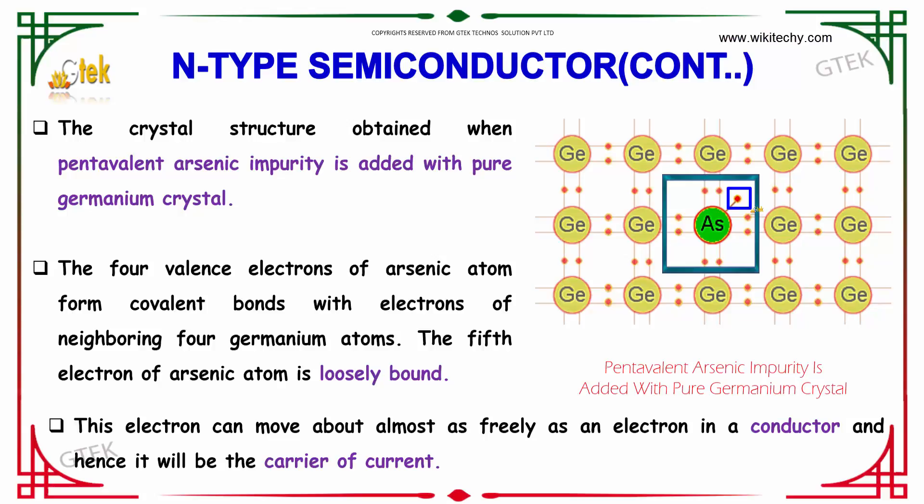This fifth electron can move about almost as freely as an electron in a conductor, and hence it is the carrier of current.